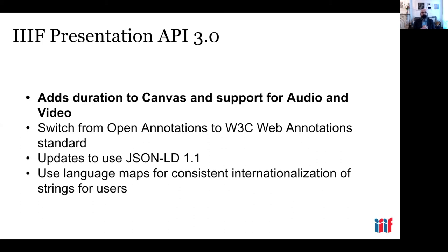So the first piece we'll talk about here is the Presentation API — the 3.0 version, which was just published in June of 2020. You can see here listed some of the major components that came with that update. But the main one I want to focus on — really a feather in the cap of this new release — is this idea that it adds a duration dimension to what we call the canvas. So for a long time, we've had this idea of an X and Y canvas in which you can put images and other materials to present to end users. And now, with the addition of a time-based dimension, we can juxtapose images as well as time-based media on the same canvas.